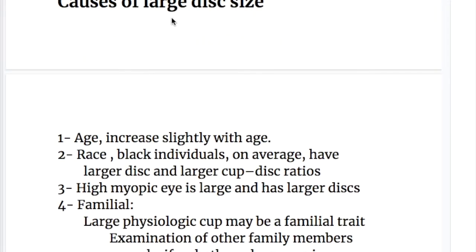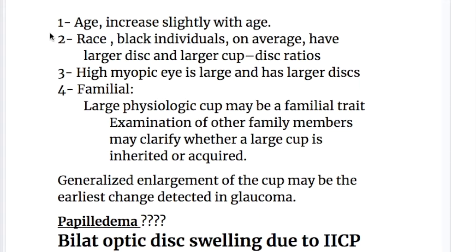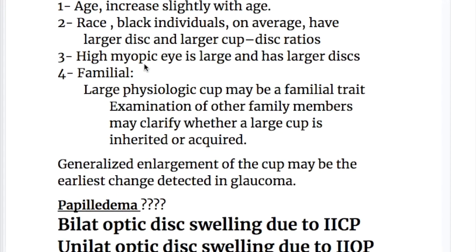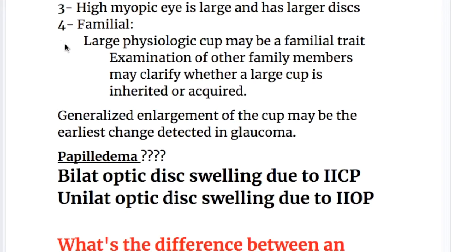What are the causes of a large disc size? Number one, age — disc size increases slightly with age. Number two, race — Black individuals, on average, have larger discs and larger cups, so a higher CD ratio. Number three, a highly myopic eye is large and has larger discs and a large cup. Number four, familial — a large physiologic cup may be a familial trait, and examination of other family members may clarify whether a large cup is inherited or acquired.